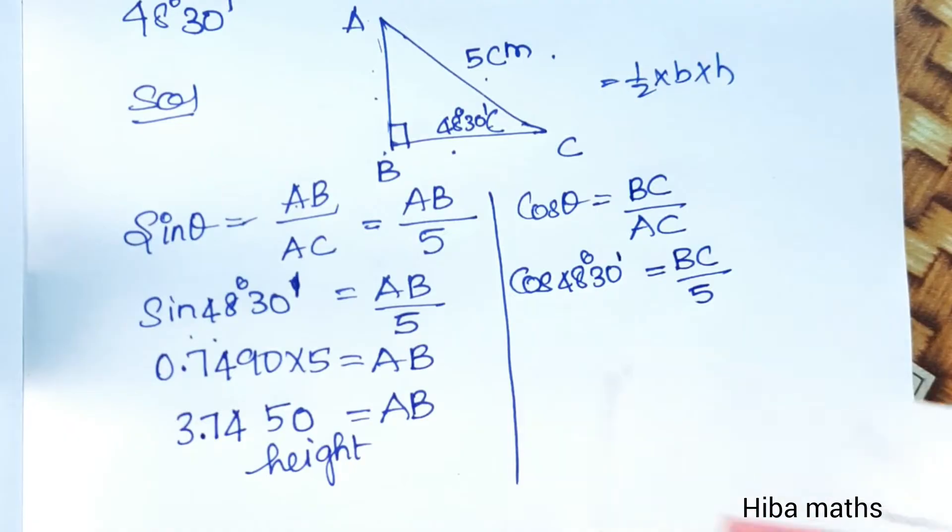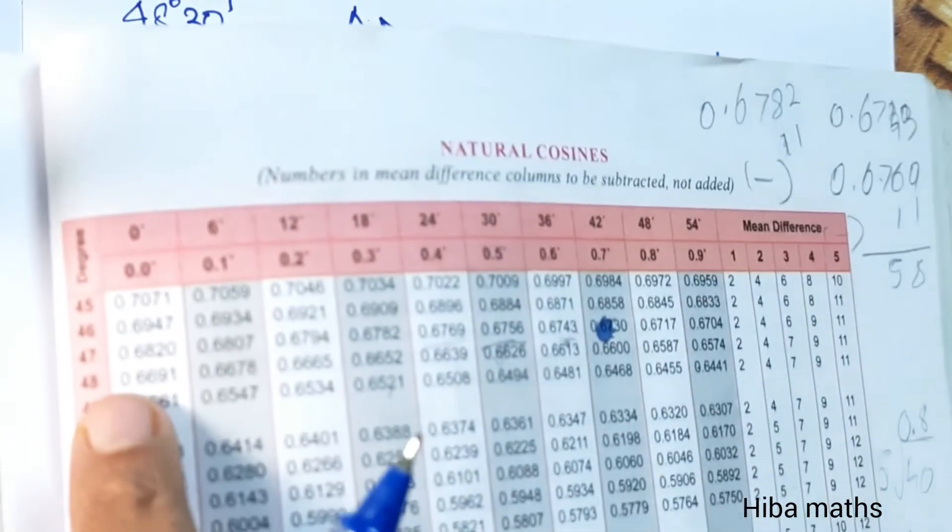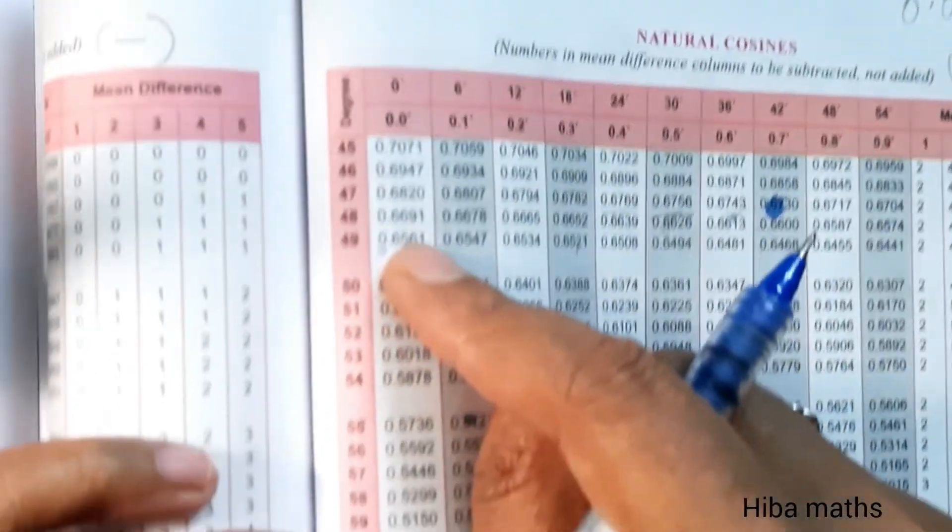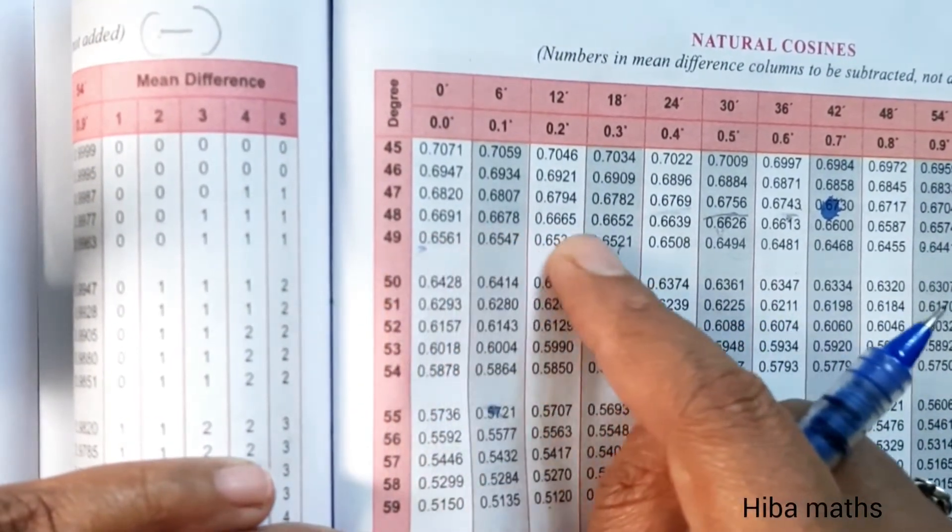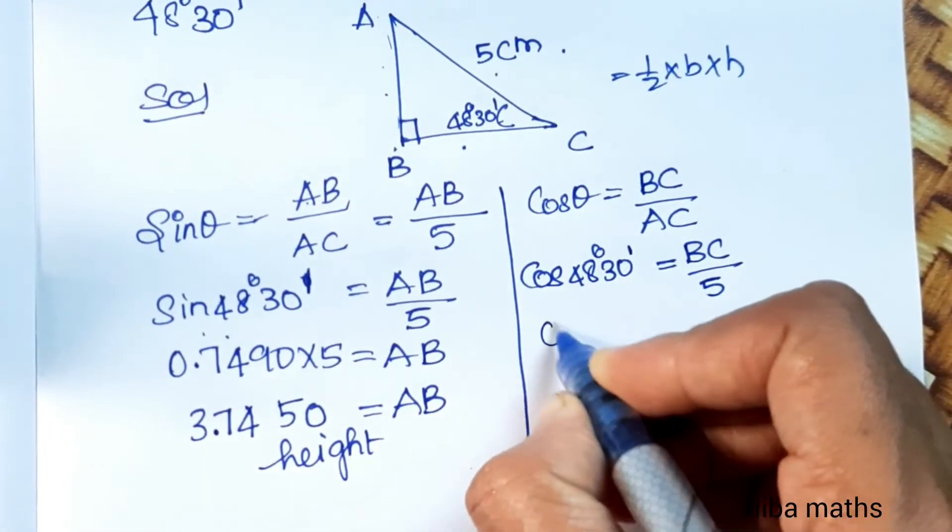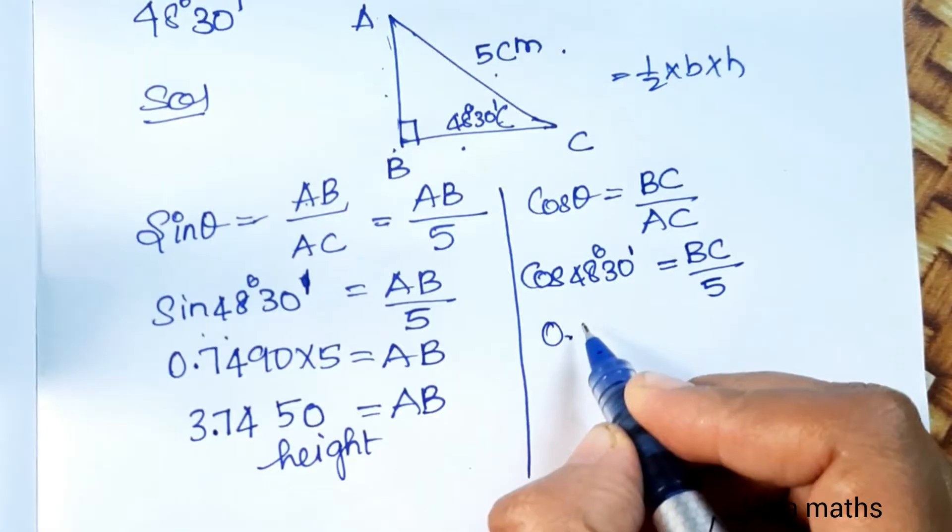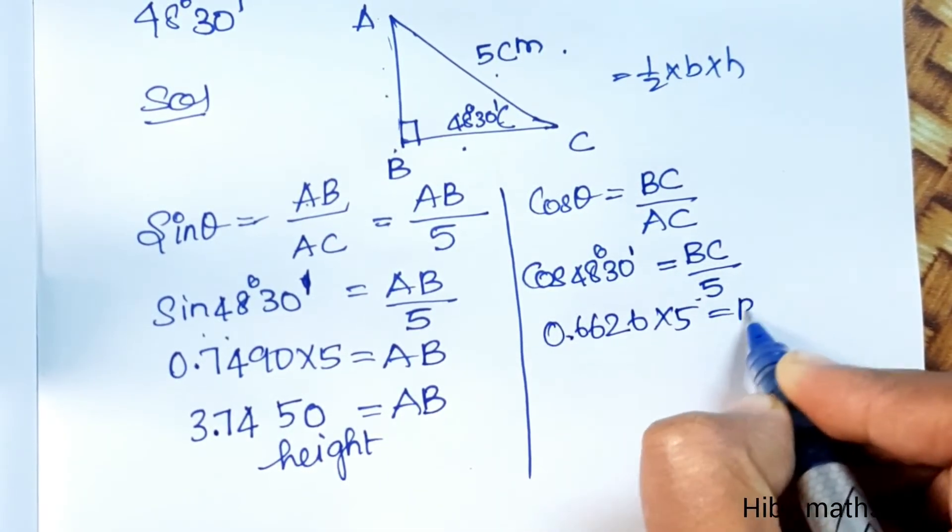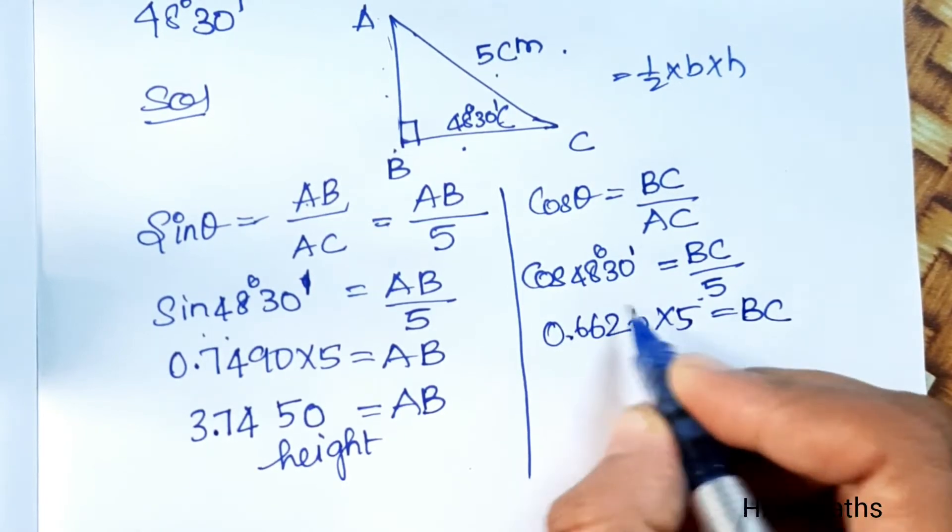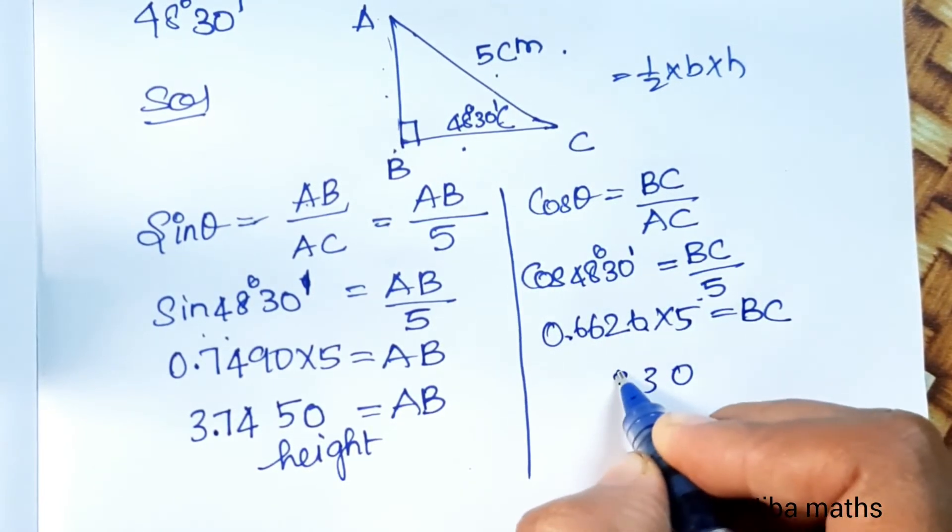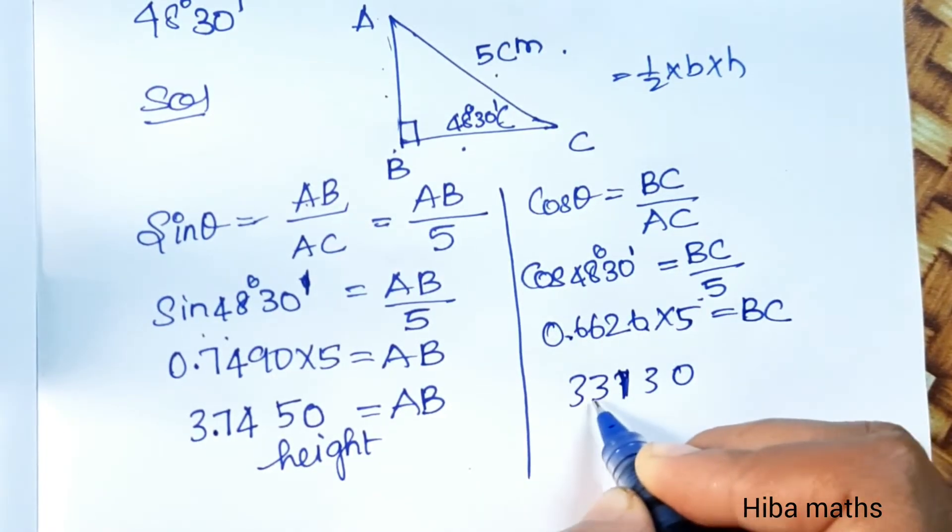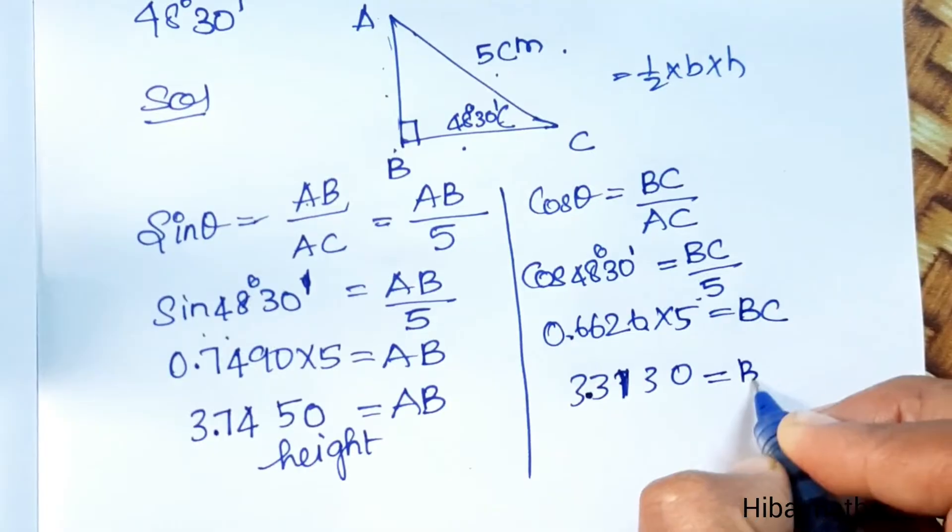Cos 48 and 30 - you see it in the book. Cos 48 and 30 equals 0.6626. 0.6626 multiplied by 5 equals BC. 3.313 equals BC.